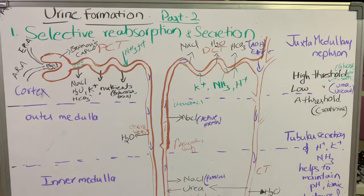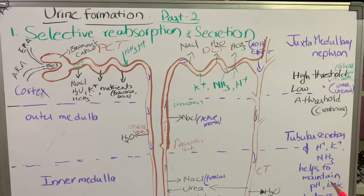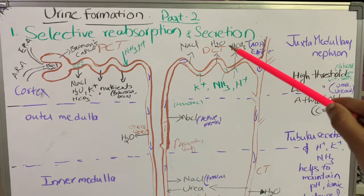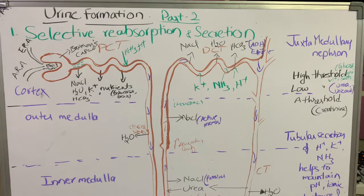Tubular secretion means that the cells of the renal tubule — known as tubular cells — secrete substances like hydrogen ions, potassium ions, and ammonia into the filtrate to maintain the pH value and ionic balance of the body fluids or blood. The secretion of hydrogen ions, potassium ions, and ammonia from tubular cells into the filtrate is known as tubular secretion.